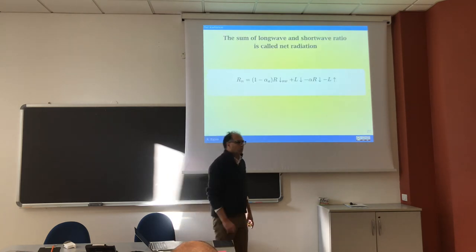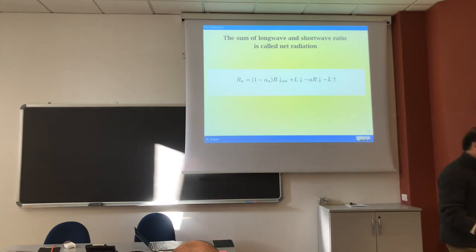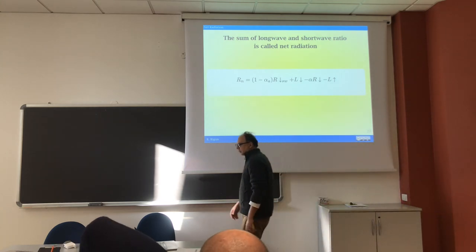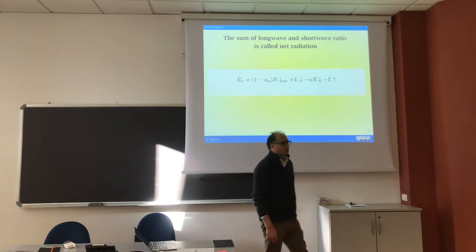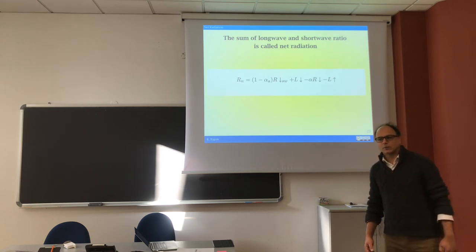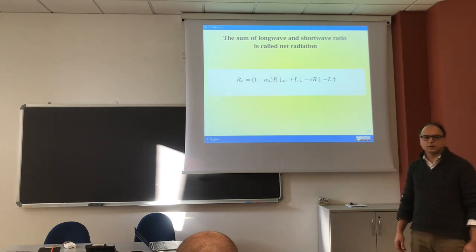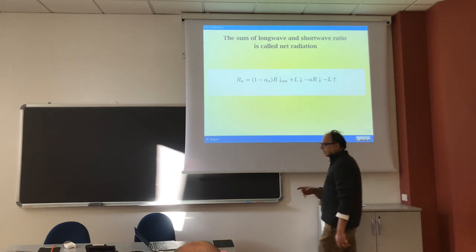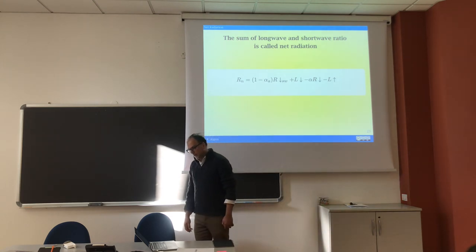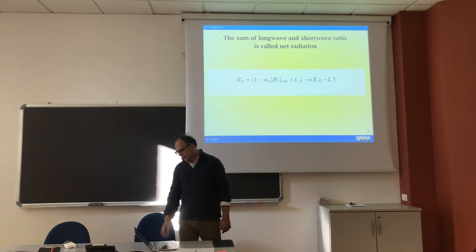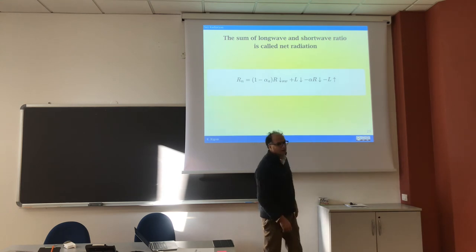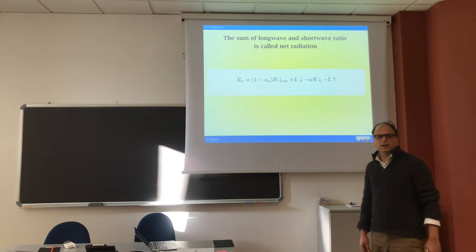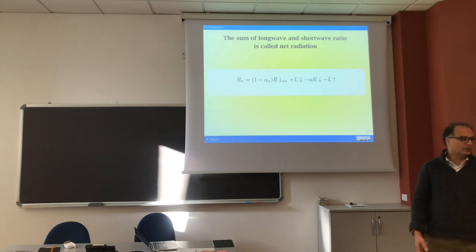Finally, considering the sum of longwave and shortwave radiation gives the net radiation budget. We write it as Rn, where alpha is the albedo of the surface, the downward shortwave is the total shortwave radiation after removing atmospheric absorption, L_down is the longwave radiation coming down, and we also have the upward components: alpha times R_up (radiation reflected back) and the longwave up given by the temperature of the point.